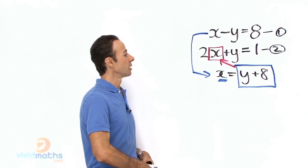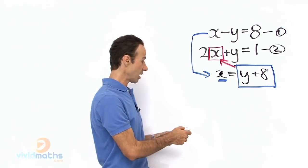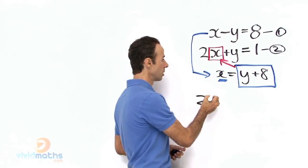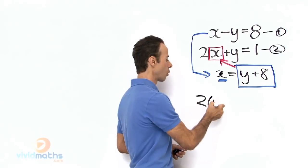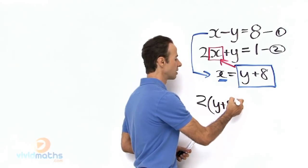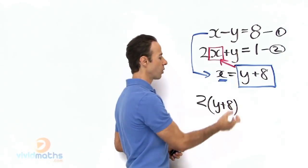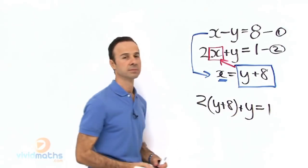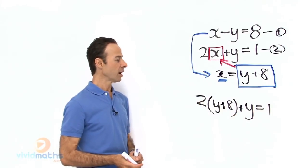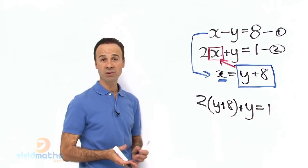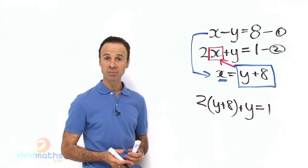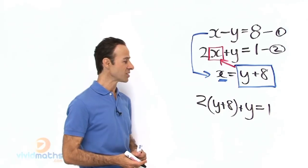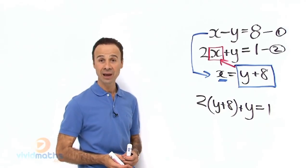Let us substitute in there. So this will become 2 bracket, let us put this in there, y plus 8 close bracket plus y equals 1. Now this equation only has y's, there are no x's, so it is easy to solve for y. So let us expand and solve just like a linear equation.